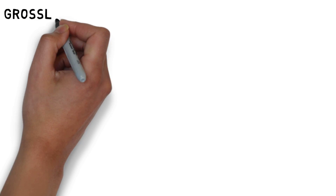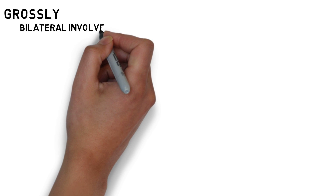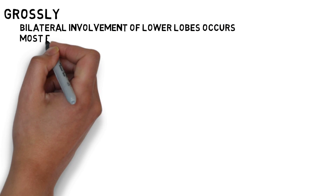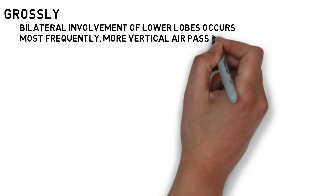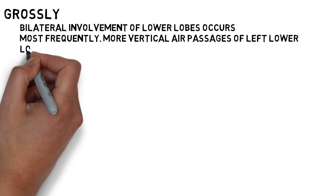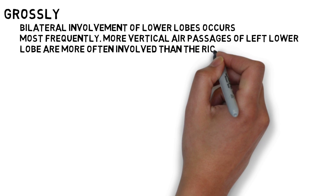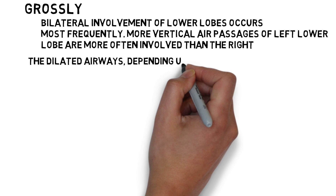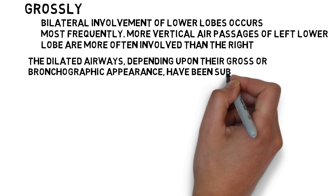The gross pathological appearance of the lungs in bronchiectasis: the lungs may be involved diffusely or segmentally; bilateral involvement of the lower lobes occurs more frequently. The more vertical air passages of the left lower lobes are more often involved than the right. The pleura is usually fibrotic and thickened with adhesion to the chest wall.